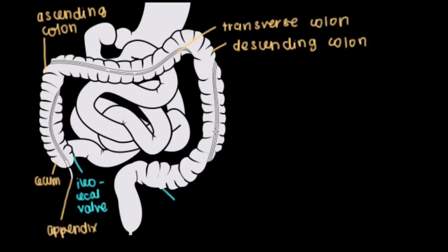The descending colon does what it says — it descends. Then the last part of our large intestine is where we're not really descending anymore but flipping around, going upwards, forming sort of an S shape. That's why this last part is called the sigmoid colon — sigmoid because it has an S shape to it.